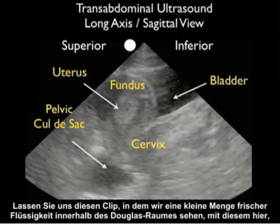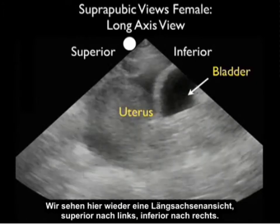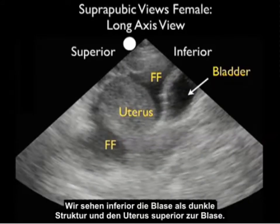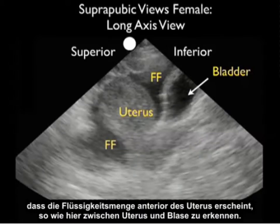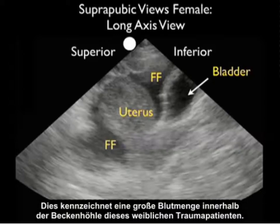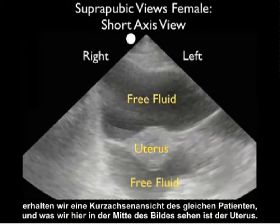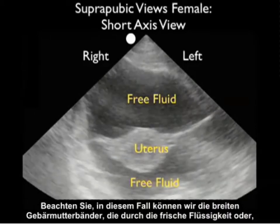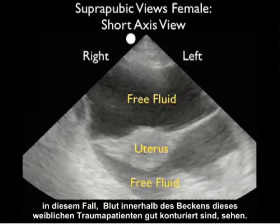Let's contrast that clip showing a small amount of fresh fluid within the pelvic cul-de-sac with this one — a female trauma patient with a large amount of bleeding within the pelvic cavity. Again in long axis, we see the bladder inferiorly and the uterus superior to the bladder. Notice fresh fluid posterior to the uterus within the cul-de-sac, but the amount of fluid also comes anterior to the uterus, between the uterus and the bladder. In the short axis view of the same patient, we see the uterus in the middle with large amounts of fresh fluid both anterior and posterior to it, with the broad ligaments of the uterus well outlined by all the fresh fluid within the pelvis.